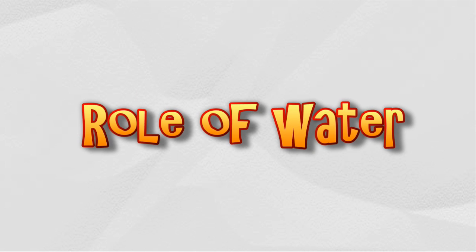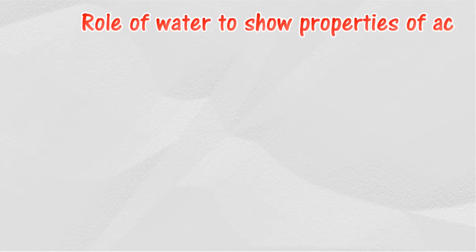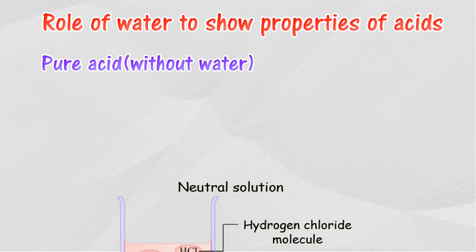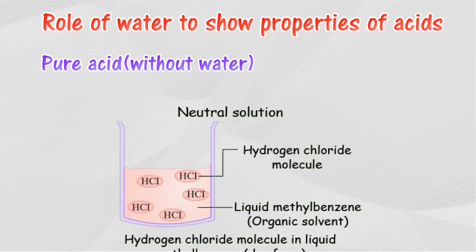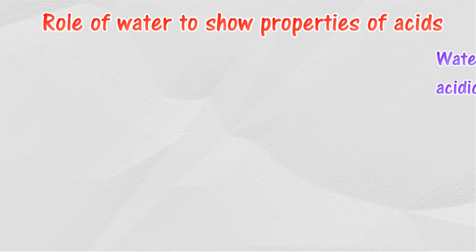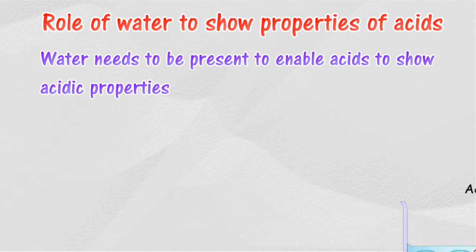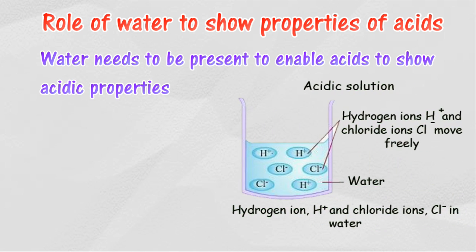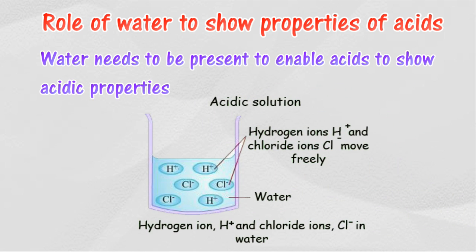Role of water to show properties of acids. A pure acid, or acid without water, does not show acidic properties. This is because acids exist as neutral covalent molecules and do not dissociate to form hydrogen ions. When a pure acid is dissolved in water, it will show the properties of acids, because acids can dissociate in water to form hydrogen ions or hydroxonium ions, which are free to move.